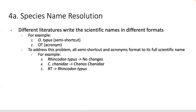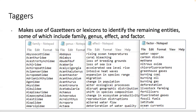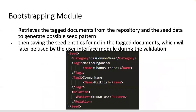We also perform name resolution because literature often refers to scientific names in different formats or abbreviations, which need to be normalized to the same form. Additional resources like gazetteers and lexicals are used to recognize valid names, and key phrases are used especially for identifying effects so that the correct entries are extracted.